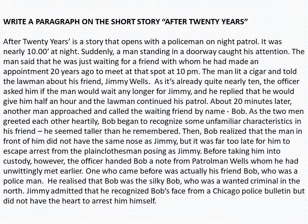Jimmy realized that Bob was the 'Silky Bob,' who was a wanted criminal in the north. Jimmy admitted that he recognized Bob's face from a Chicago police bulletin, but did not have the heart to arrest him himself.